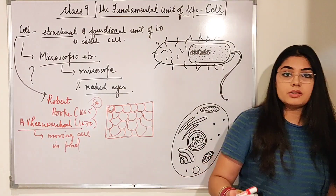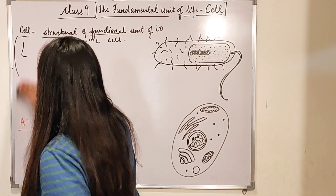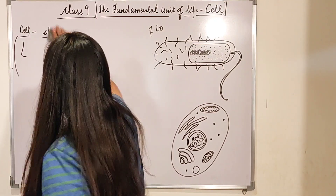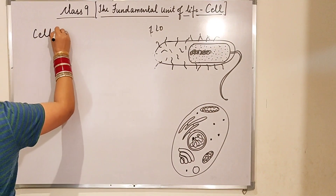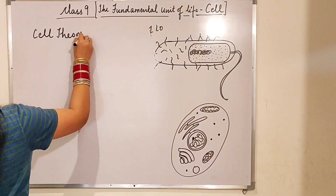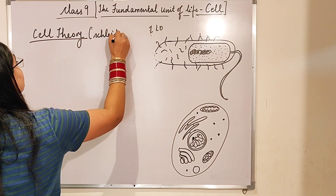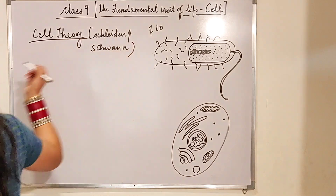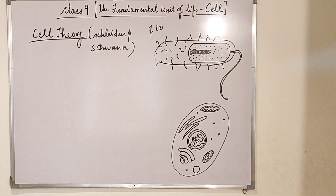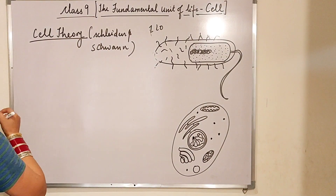Then another theory came up — the Cell Theory. Cell Theory was given by Schleiden and Schwann. Please make sure you are writing the correct spellings: Schleiden and Schwann gave the Cell Theory in 1839.